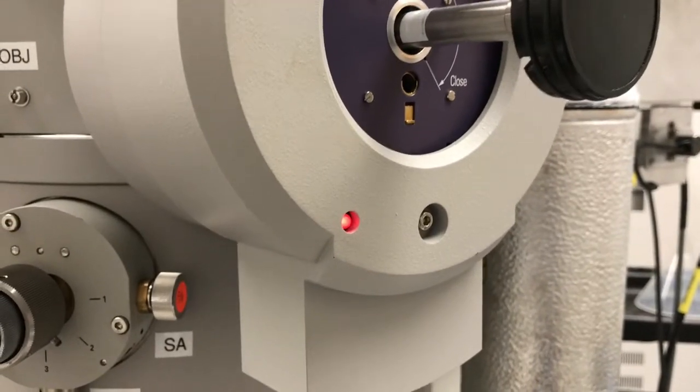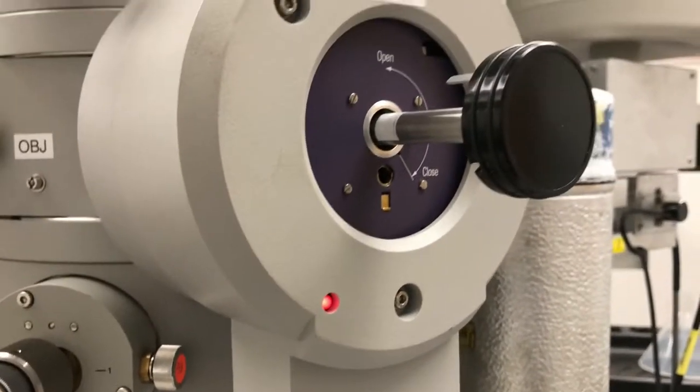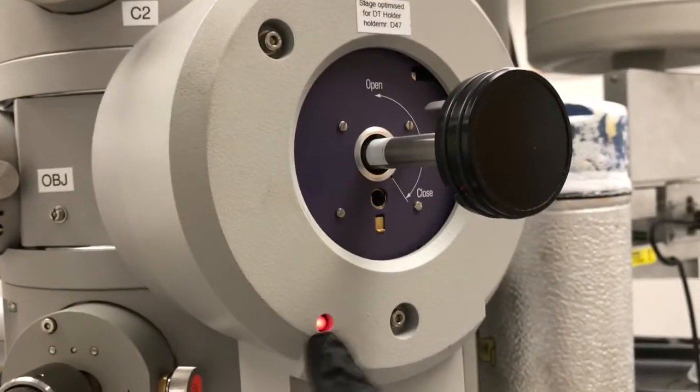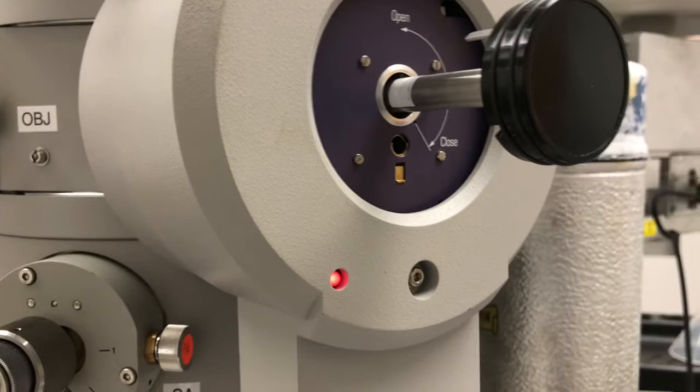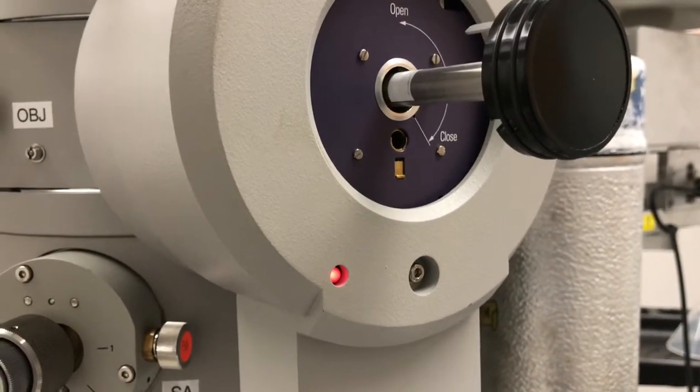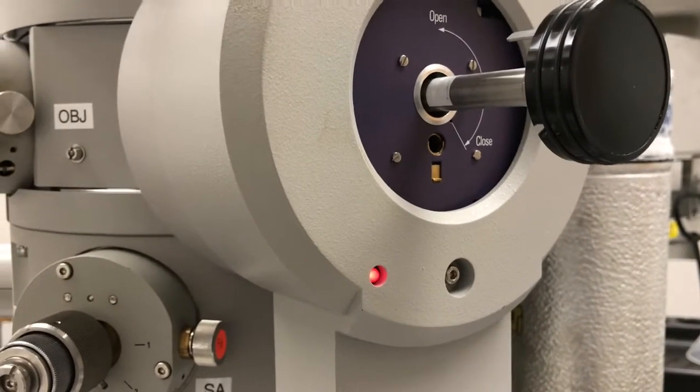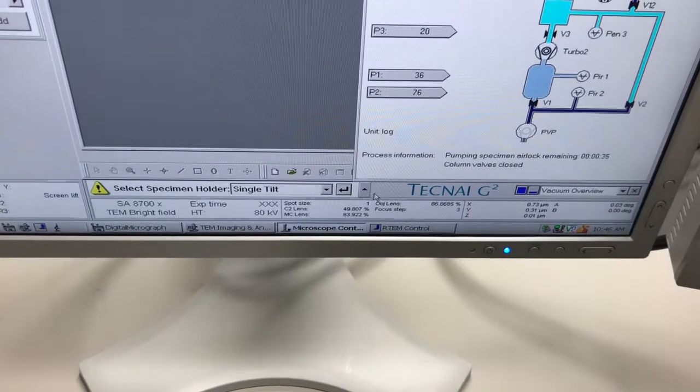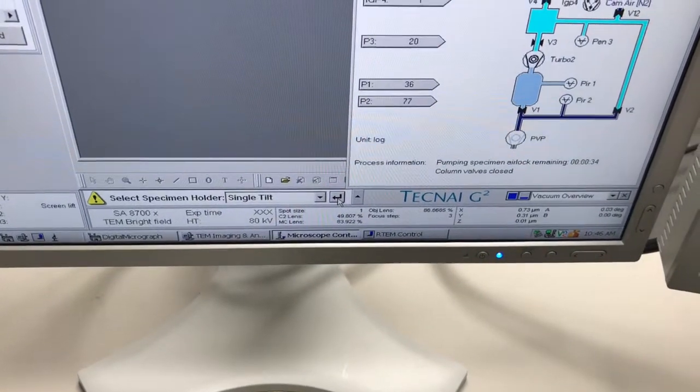That means the airlock's now being evacuated. This light also comes on. Red means stop, that means that the system is either evacuating or it's waiting for some information. It is of course waiting for us to tell it down here in microscope control that we have a single tilt holder, which we do.